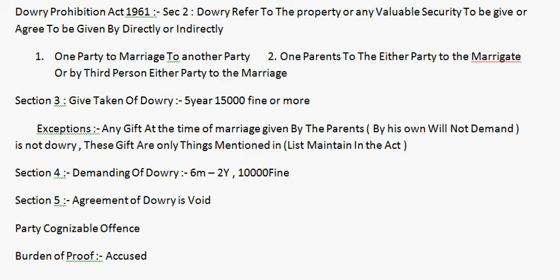Directly ka matlab — jo dowry chahiye wo kehte hain: 'Aap mujhe gaadi de na, bangla de na, paise de na.' Indirectly ka matlab — wo kehte hain: 'Bharat ka swaagat acche se kar dena,' ya 'us pe itna kharcha kar dena, palace pe itna kharcha kar dena.' Yeh indirectly liya jayega.